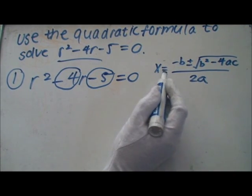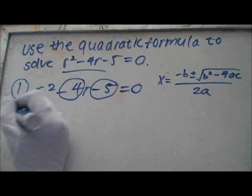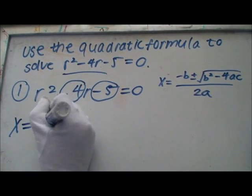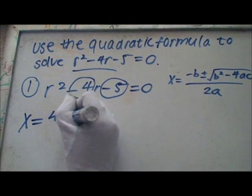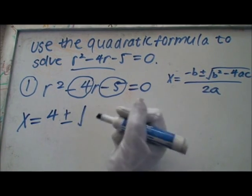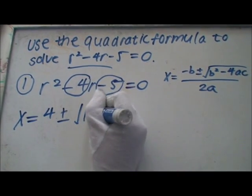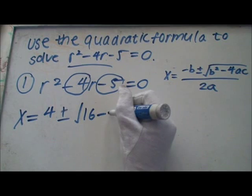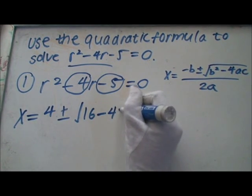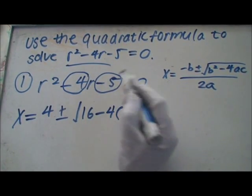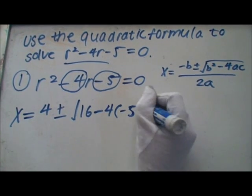So, you do negative 4 should be 4 plus or minus the square root of b squared, which is 16, minus 4 times a, which is 1, times c, which is negative 5, over 2a.